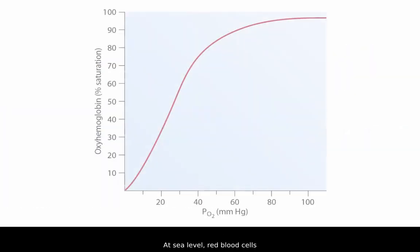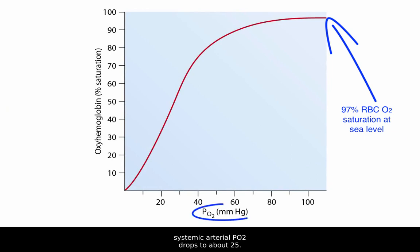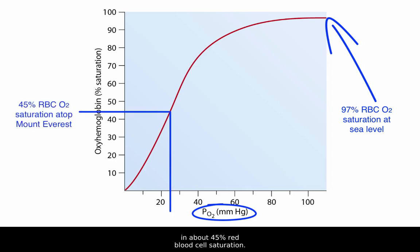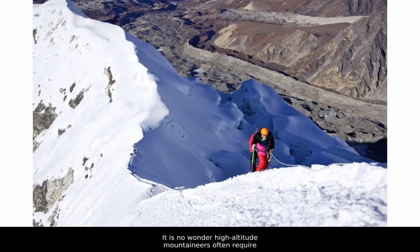At sea level, red blood cells in the systemic circuit are 97% saturated, but for climbers atop Mount Everest, systemic arterial PO2 drops to about 25. Looking at an oxygen-hemoglobin saturation curve, a PO2 of 25 would result in about 45% red blood cell saturation — less than half of what it is at sea level. It is no wonder high-altitude mountaineers often require supplemental oxygen.